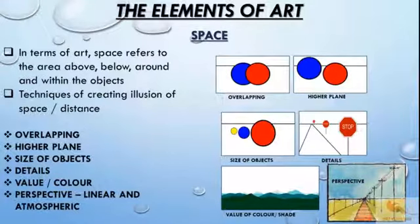Space: in terms of art, space refers to the area above, below, around, and within the objects in the frame. By different ways we can show space: overlapping, putting objects on higher plane, varying the size, details being shown, value of shade or color, and perspective are the main ones.